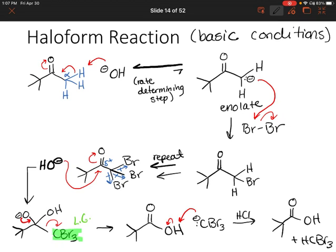This is actually a mechanism that we'll see in one of our labs, so just keep this in mind for the future. In this video, we covered alpha halogenation for ketones and aldehydes under acidic conditions. We also covered how to perform alpha-bromination using the Hell-Volhard-Zelinski reaction for carboxylic acids. And then we talked about how to perform alpha halogenation under basic conditions, which is called the haloform reaction. In the next video, we are going to go over something called aldol addition reactions.